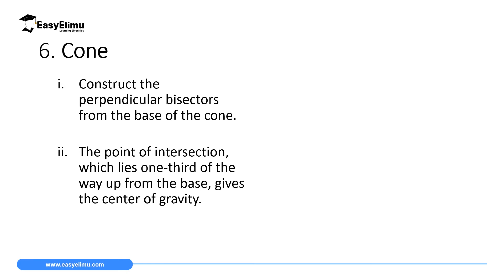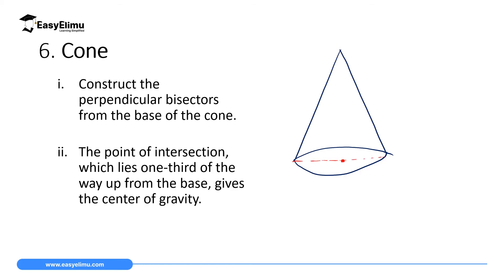The sixth shape is a cone. To determine the center of gravity of a conical shape, first draw the diameter of the bottom circle. Then draw a perpendicular bisector from the bottom of the cone, another perpendicular bisector to the other side forming 90 degrees, and another perpendicular bisector also forming 90 degrees. Where these bisectors meet, that will be the center of gravity of this conical shape.